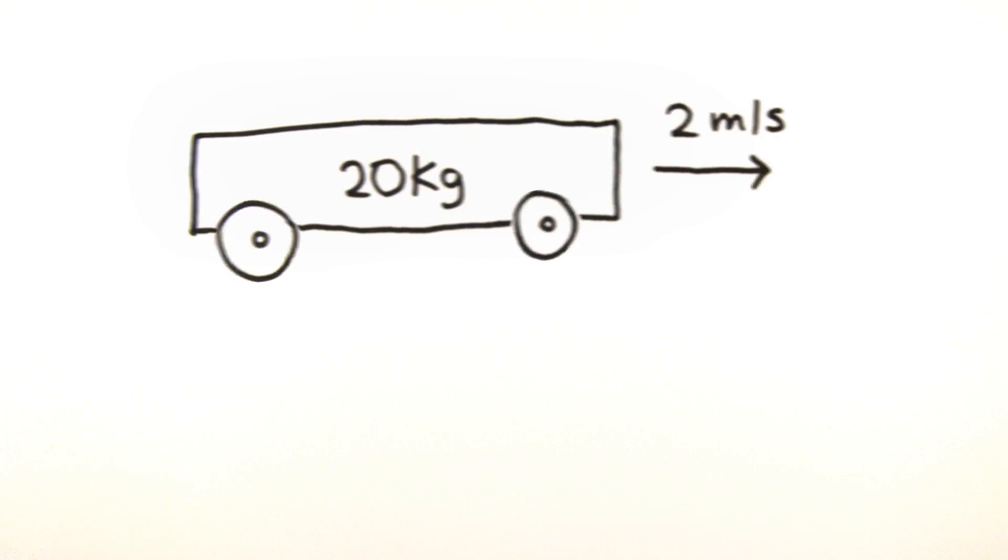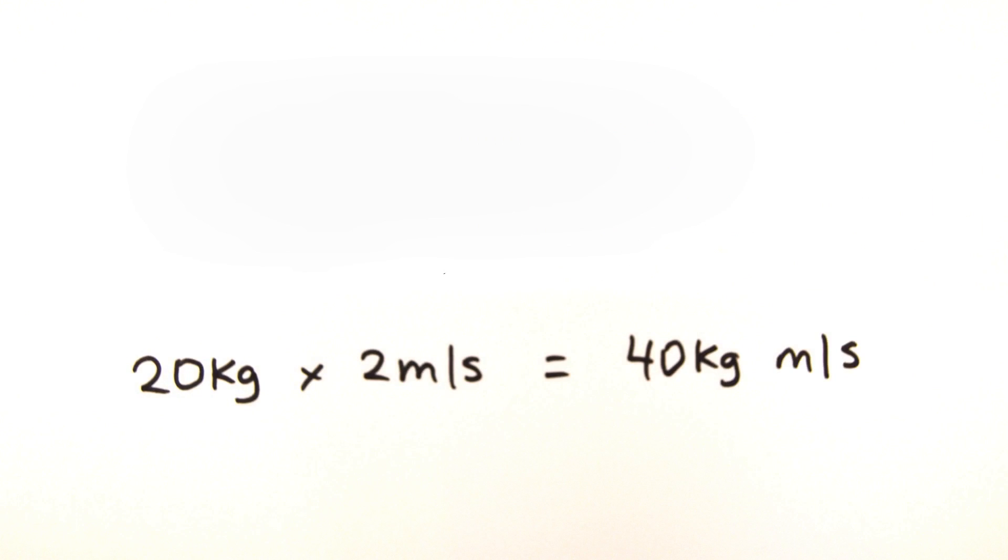A basic example of this would be the momentum of a 20 kilogram trolley travelling at 2 meters per second would have a momentum of 40 kilogram meters per second.